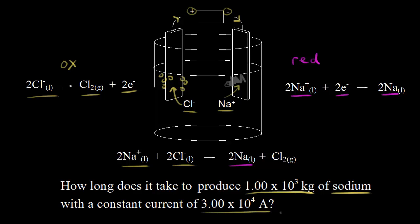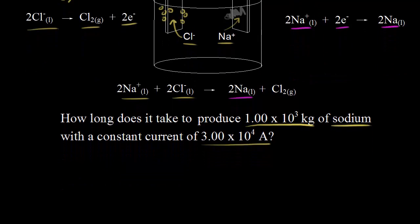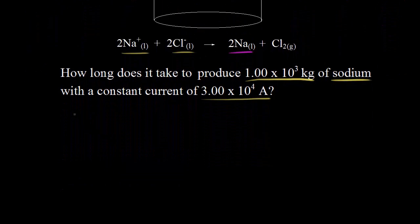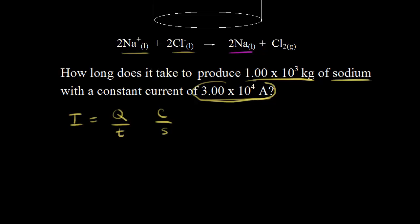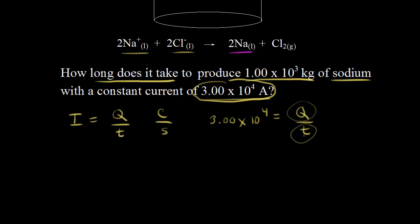So we have another quantitative electrolysis problem. We're going to start with the definition of current: current equals charge over time, Q over T, where charge is in coulombs and time is in seconds. We know the current is 3.00 × 10⁴ amps, so 3.00 × 10⁴ equals charge over time. We want to find the time, and if we can find the charge, we can solve for it.